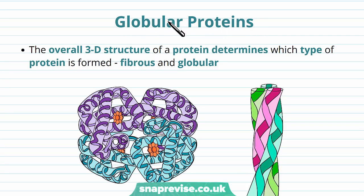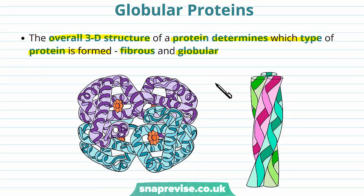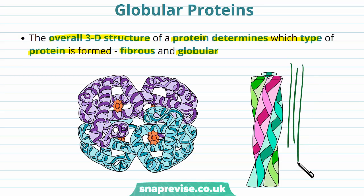Globular proteins are a specific category of proteins which have a variety of functions. The overall 3D structure of a protein is determined by the primary structure, and the 3D shape determines which type of protein we end up with. We can have two types: fibrous or globular. Fibrous proteins tend to look longer and thinner, whereas globular proteins, like haemoglobin, look more like a globule.